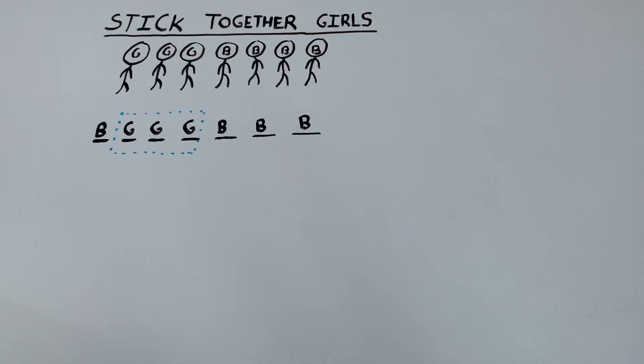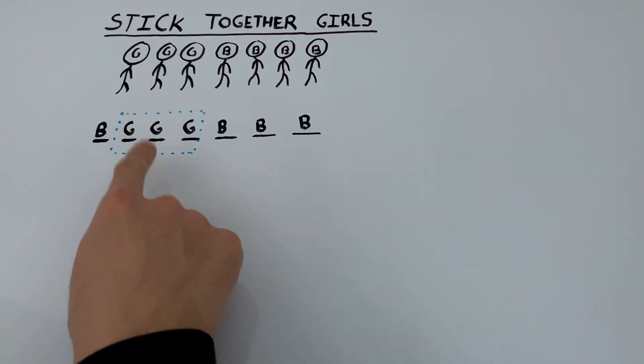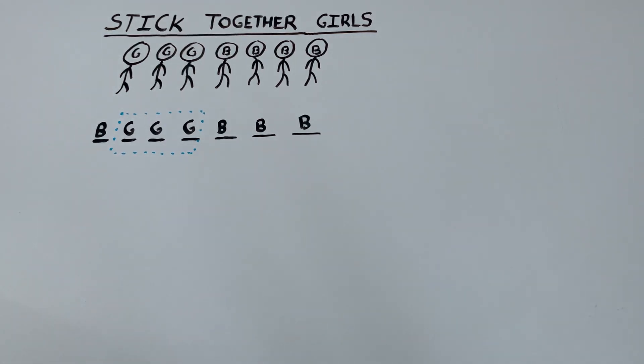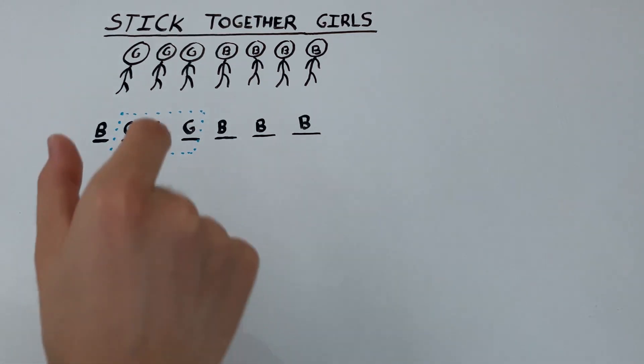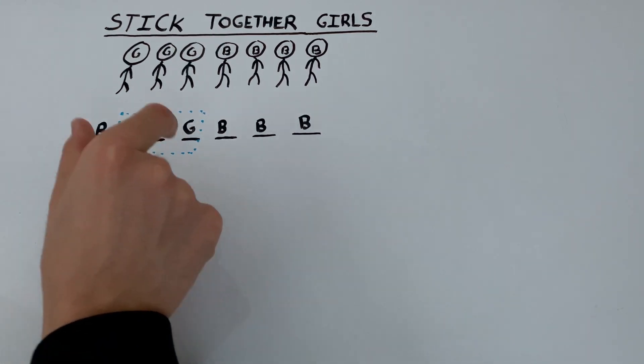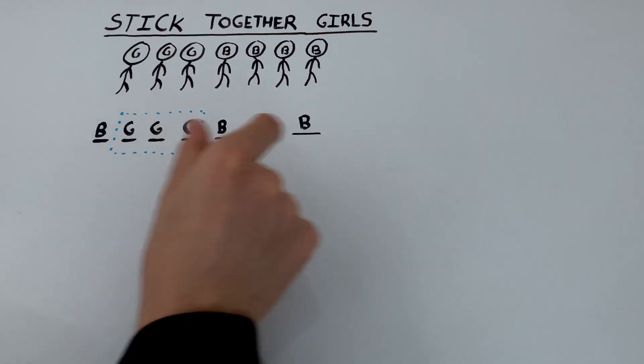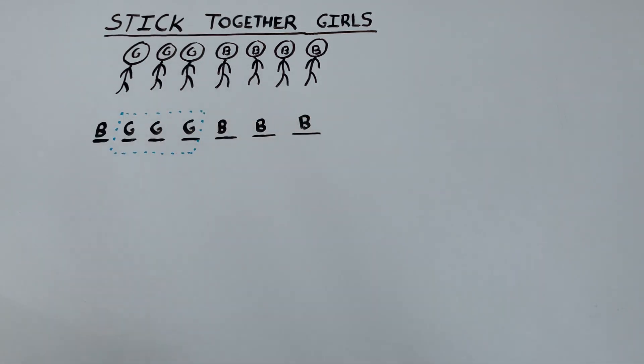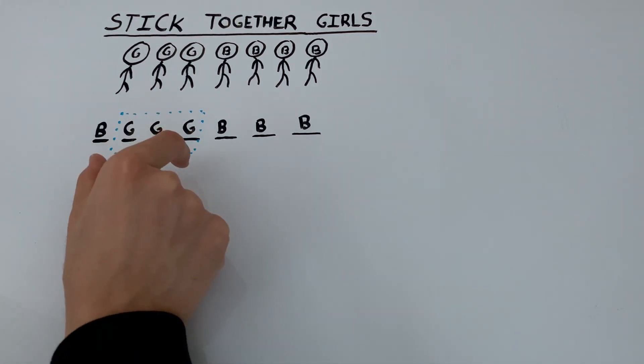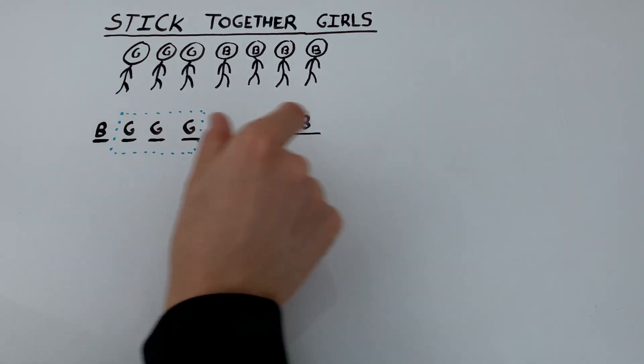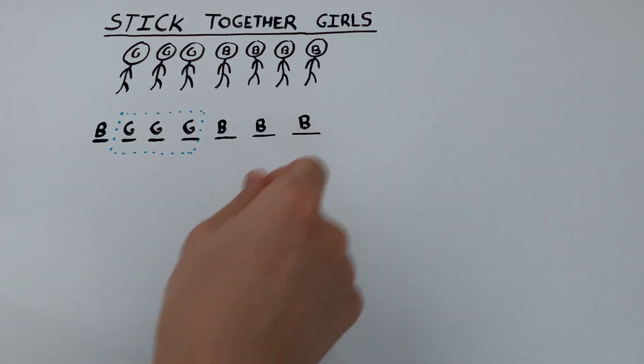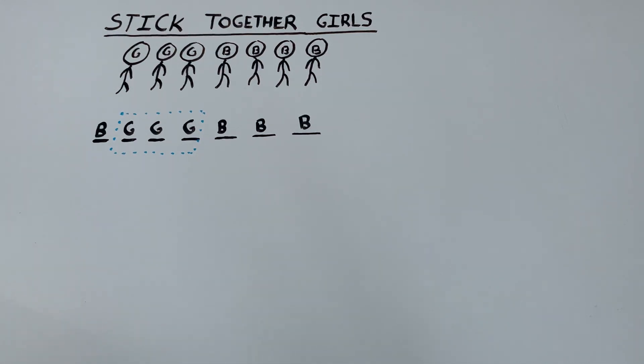So that's four boys and one gigantic block of three girls. And we're going to consider this gigantic block as one unit. So you can imagine, whenever I pick up this block and move it anywhere, now all three girls are moving together. So you can imagine, we could take this block and put it at the end right over here. So then the seating arrangement would be something like B, B, B, B, G, G, G at the end.